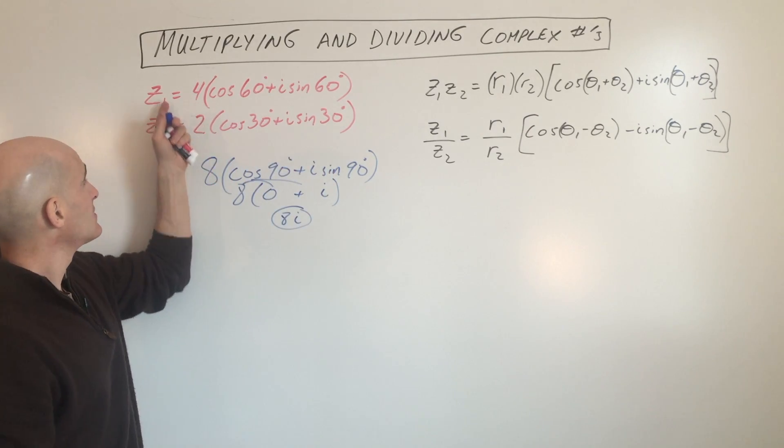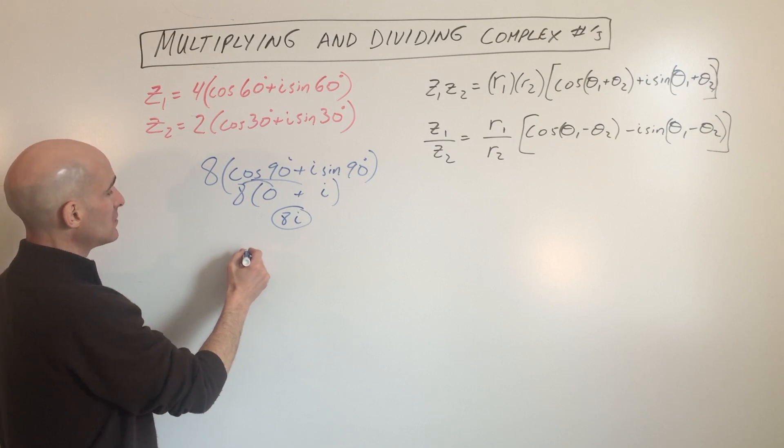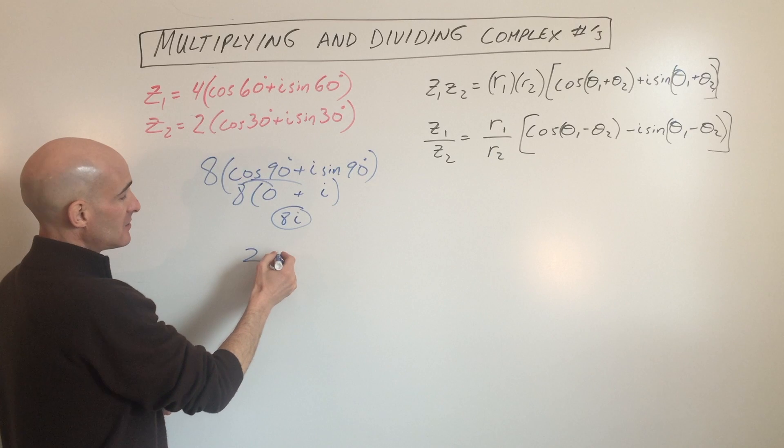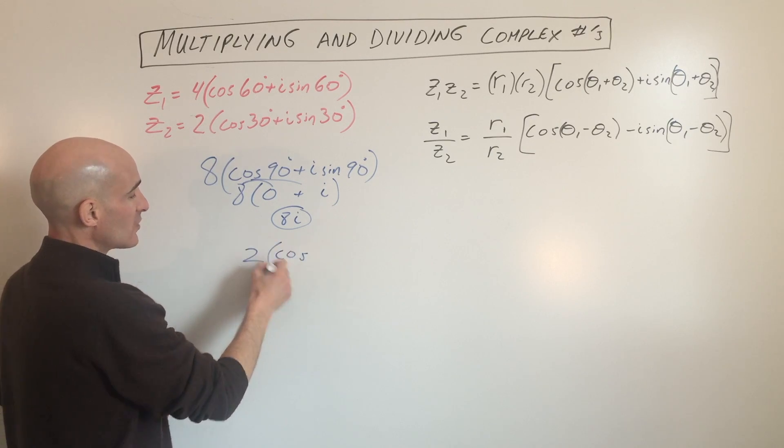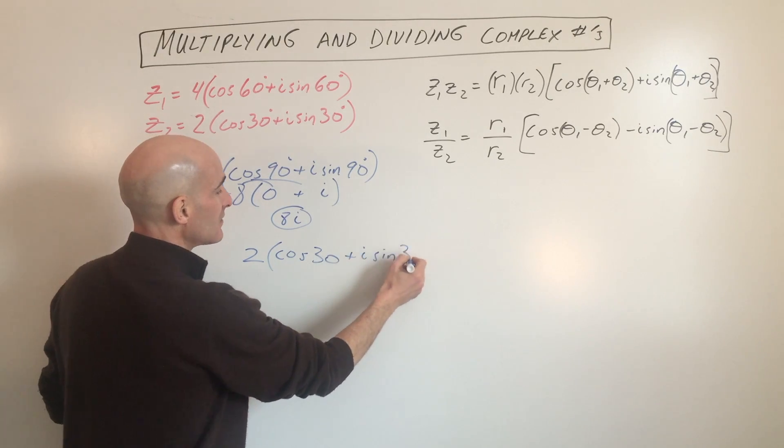Now if you want to divide z1 by z2, we're going to divide. So we've got four divided by two, which is two, 60 minus 30, which is 30. So we have two cosine 30 plus i sine 30.